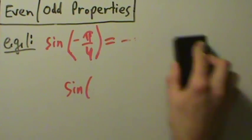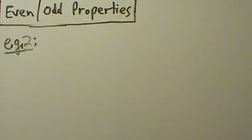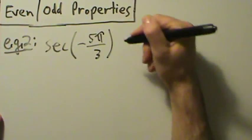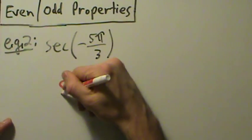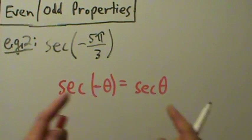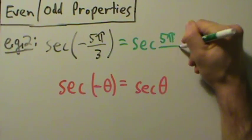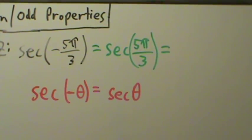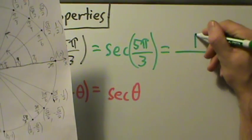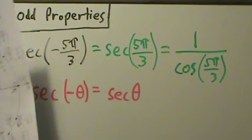Let's do example 2: secant of negative 5 pi over 3. Remember, secant is an even function — secant of negative theta equals secant of theta. So secant of negative 5 pi over 3 is the same as secant of 5 pi over 3. You might not have secant values memorized, but just know that secant is 1 over cosine. So this is 1 over cosine of 5 pi over 3.